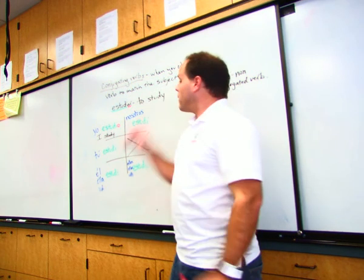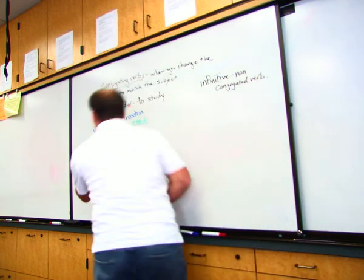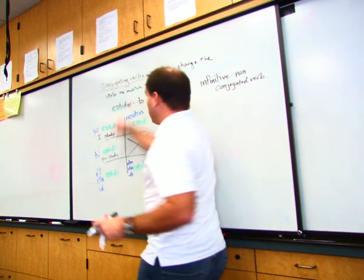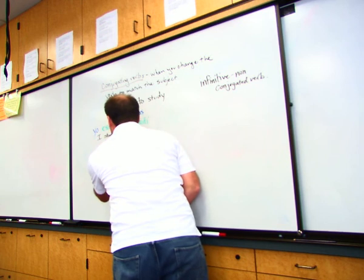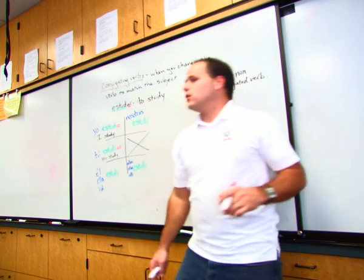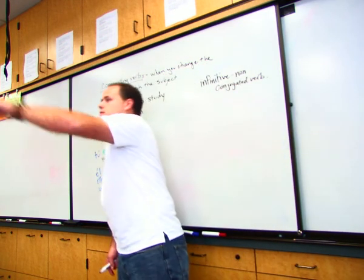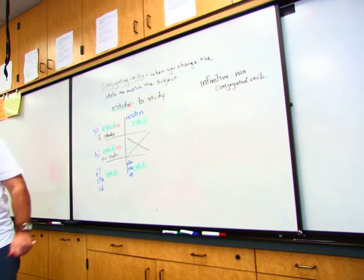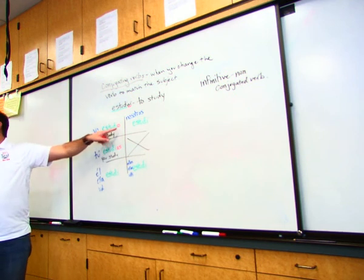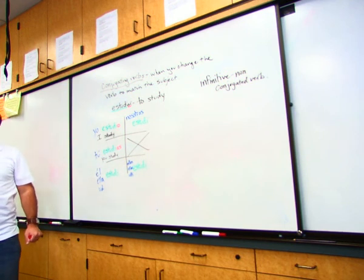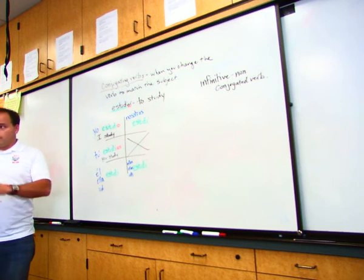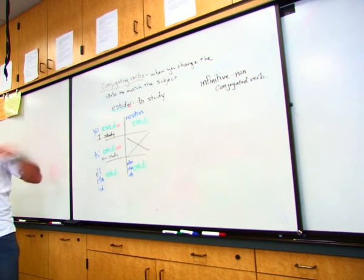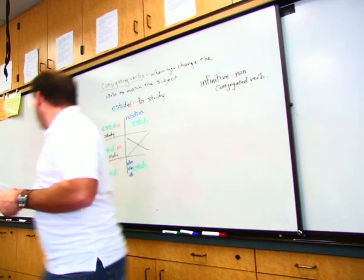If I wanted to say you study, I would drop the AR and I would add AS. Estudias. Yo estudio, tú estudias. Why wouldn't you put an AS after yo estudio? Because the yo form ends in an O. It's the way it is. You might be thinking of gender, maybe, like masculine, feminine. That's only for adjectives and nouns. Nouns have gender, adjectives match the gender. Verbs don't. Verbs have subjects, different points of view.